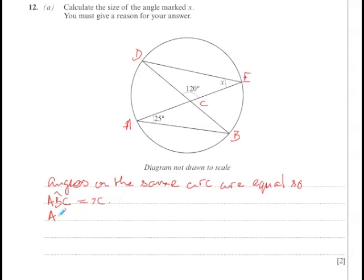ACB is congruent with DCE because they share vertices.